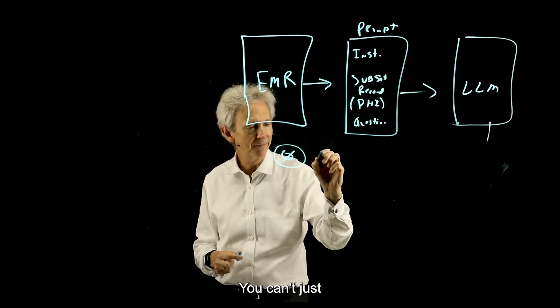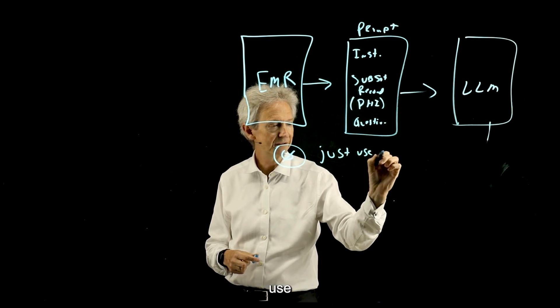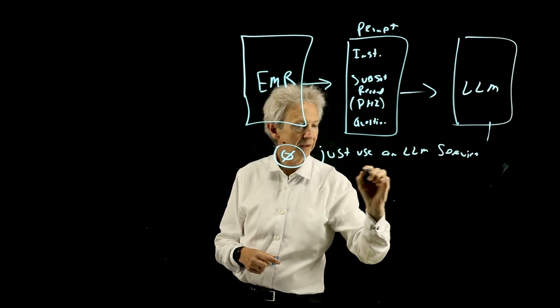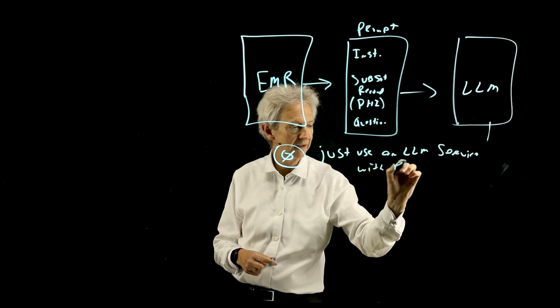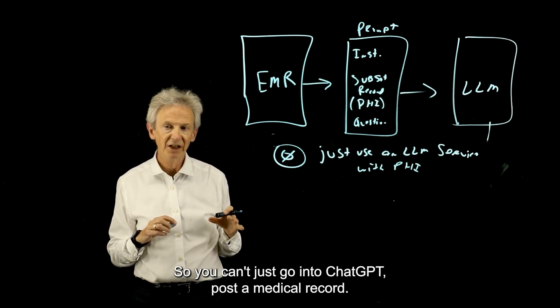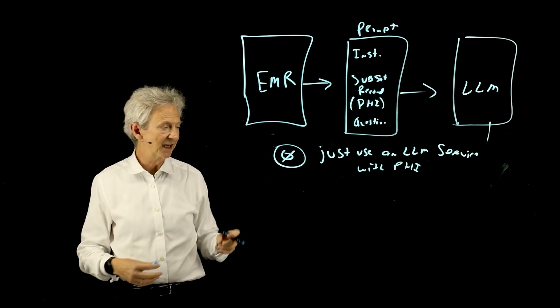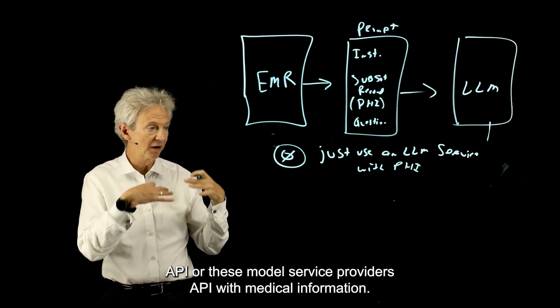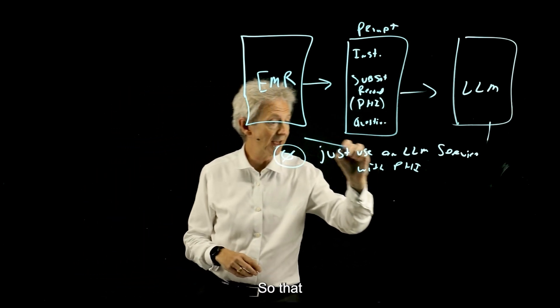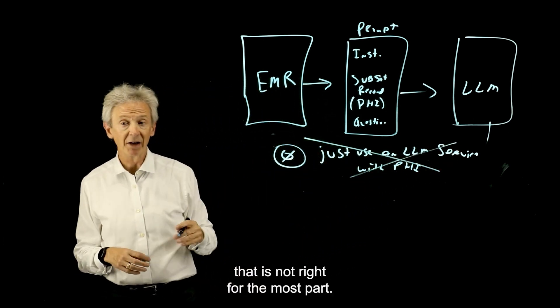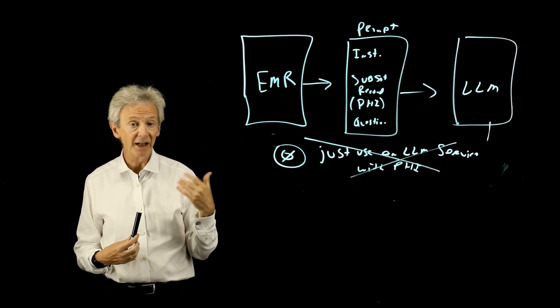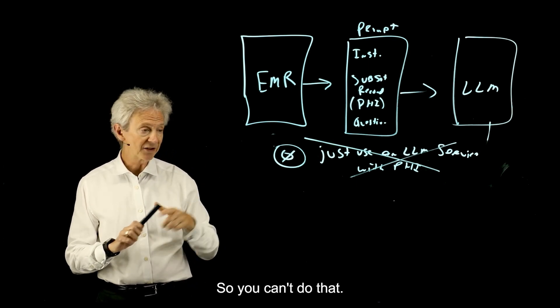I'll just call this option zero because I'm going to cross it off. You can't just use an LLM service with PHI. So you can't just go into ChatGPT, post a medical record. You can't use like OpenAI's API or these model service providers API with medical information. That is not right. For the most part, they do not guarantee that the information will be kept private or not used in training or that sort of thing. So you can't do that.